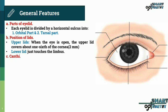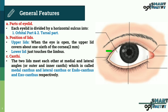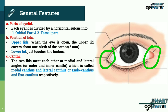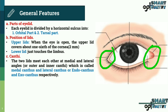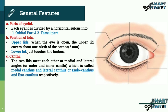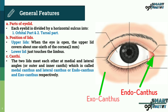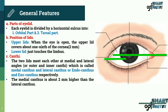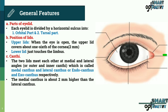Now, canthae. The two lids meet each other at medial and lateral angles, which are called the medial cantus or lateral cantus, also known as endocanthus or exocanthus respectively. In this figure you can see the endocanthus and the exocanthus. The medial cantus is about two mm higher than the lateral cantus.